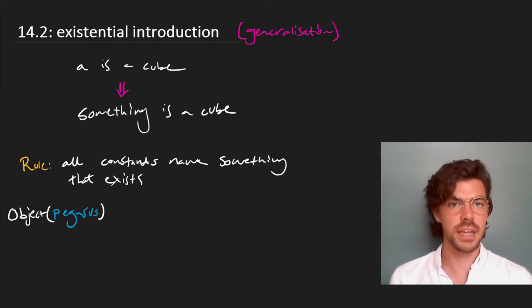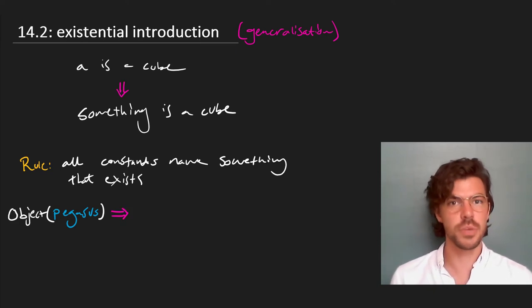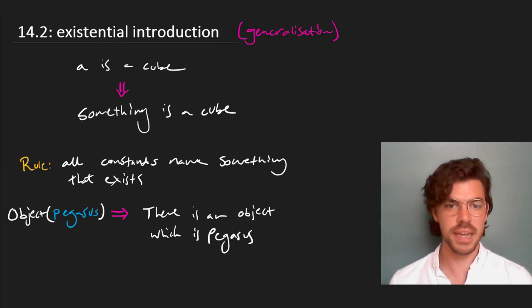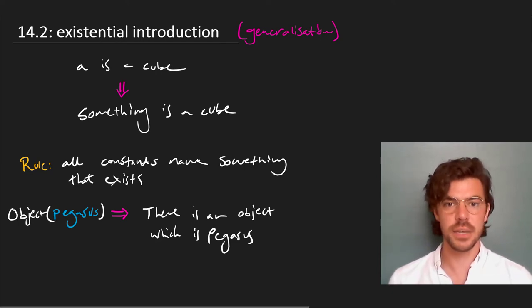So take Pegasus and use a predicate like object. Now what this says is that Pegasus is an object, but we are allowed to take from this the sentence, there is an object which is Pegasus, and that plainly won't do because there isn't any such object. This sentence says something about what really exists in the world.